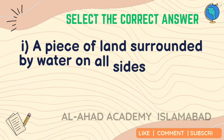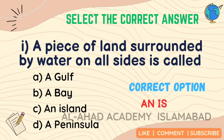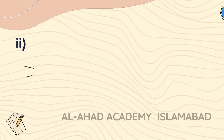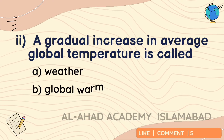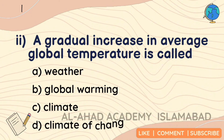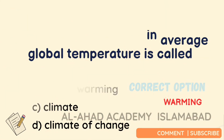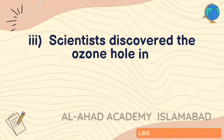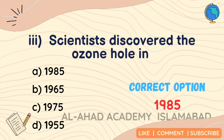A piece of land surrounded by water on all sides is called an island. A gradual increase in average global temperature is called global warming. Scientists discovered the ozone hole in 1985.